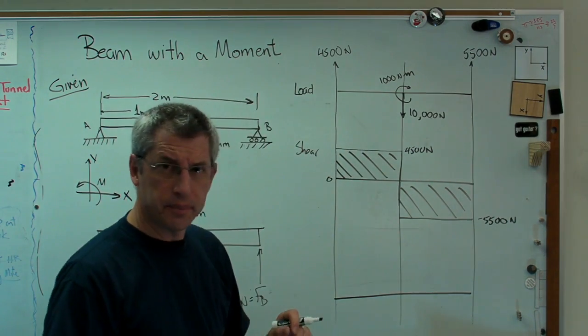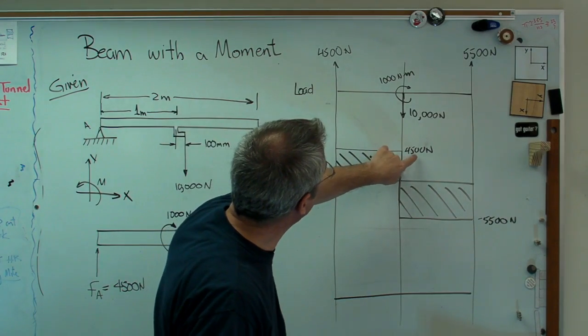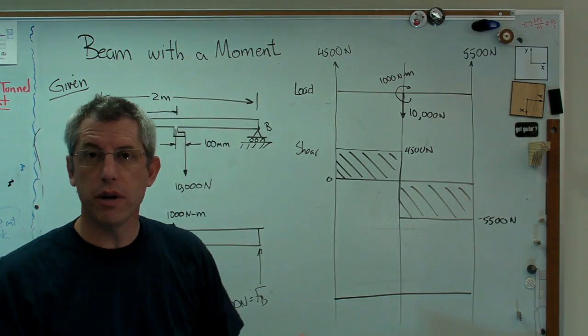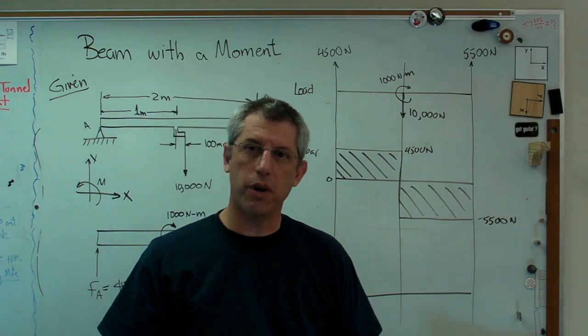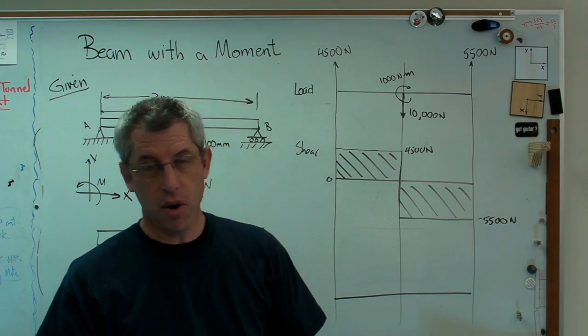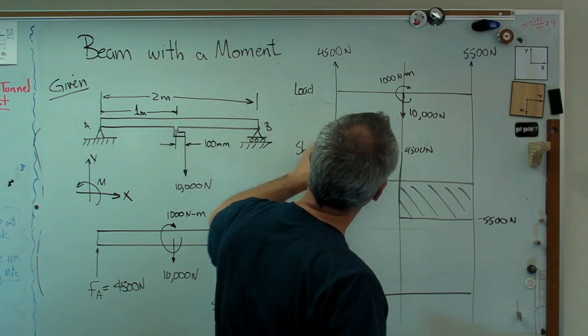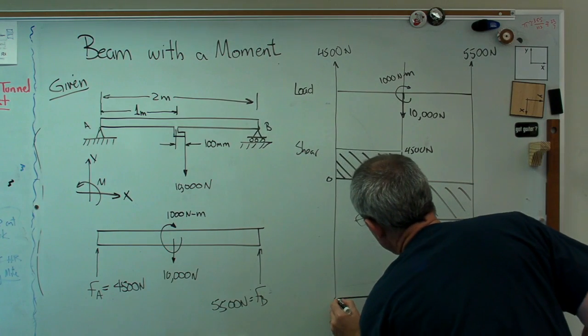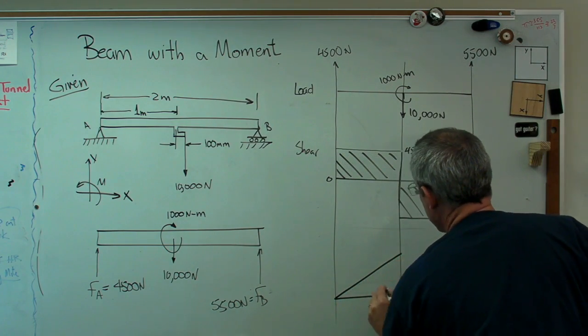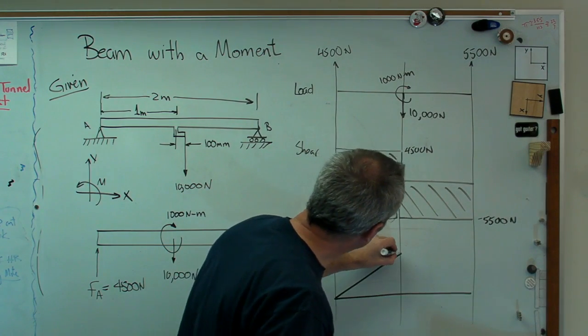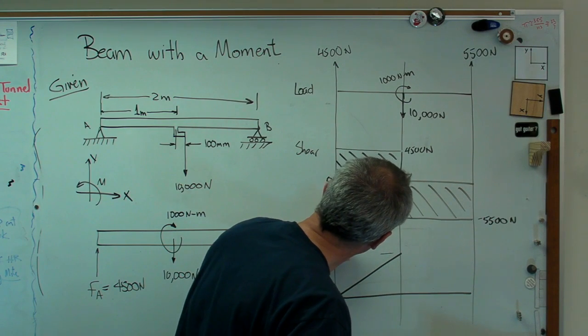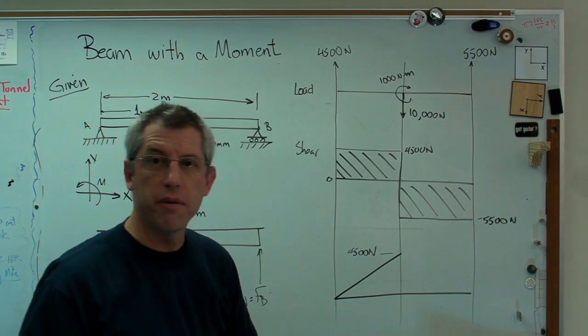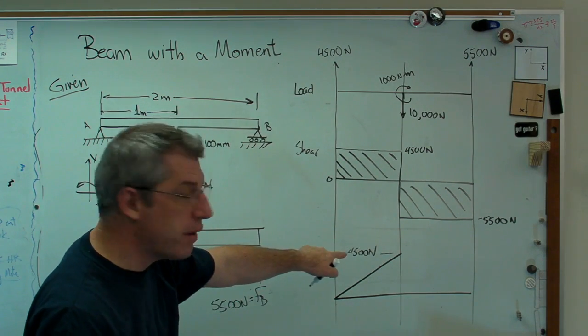So if I were to integrate that, I would get this number down here. So the area here is 4,500 newtons times a distance, which is 1 meter. 4,500 newtons times 1 meter is 4,500 newton meters. That's a moment. Since the height here is constant, the slope here is constant. And that's going to turn out to be a triangle. And that altitude right there is 4,500 newton meters.